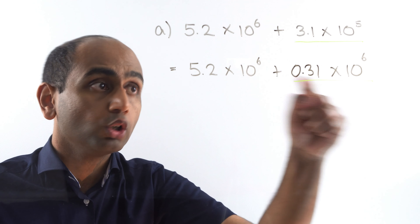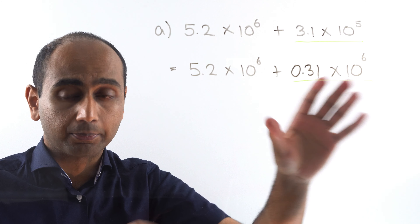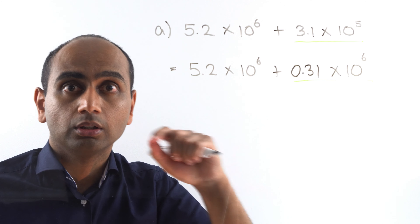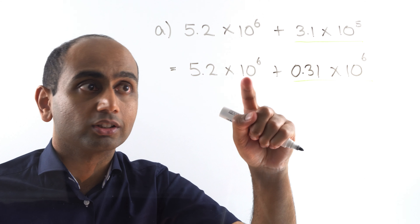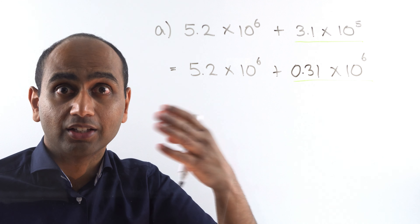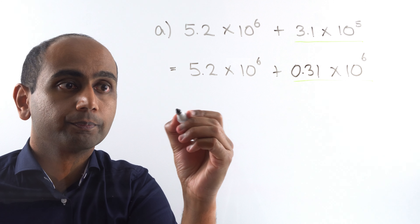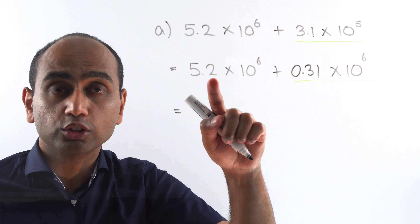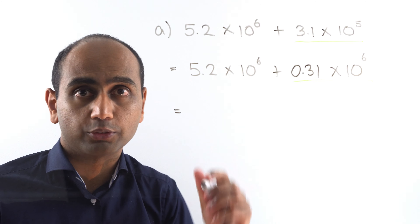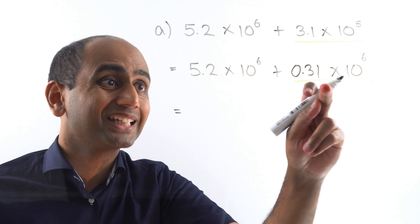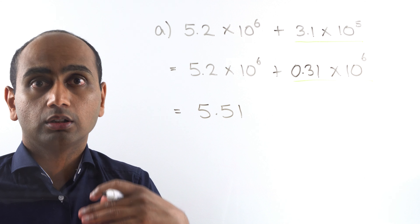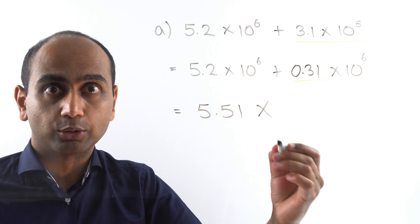This is no longer in standard form, but that's fine — we haven't finished yet. The point is we've now got two numbers with the same power of 10: 10 to the power of 6 and 10 to the power of 6, which means they are easy to add. I've got 5.2 lots of 10 to the power of 6 plus 0.31 lots of 10 to the power of 6, so that's 5.2 plus 0.31, which is 5.51 lots of 10 to the power of 6.